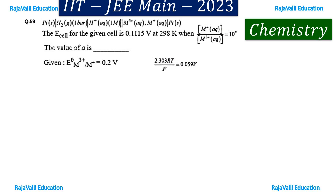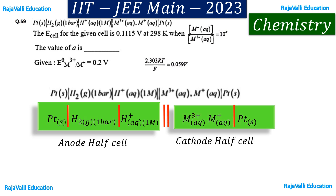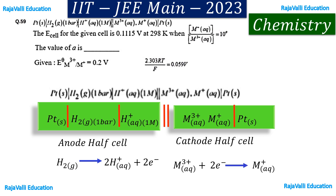Next, we see the second question. The cell representation of a redox reaction is given and the E cell value is given. If the concentration of M⁺ to M³⁺ equals 10 to the power of a, what is the value of a? To find a, we write down the cell reaction from the cell representation. The left side of the salt bridge is the anode; the right side is the cathode. At the anode, hydrogen oxidation occurs: H₂ → 2H⁺ + 2e⁻. At the cathode, M³⁺ accepts 2 electrons to give M⁺.